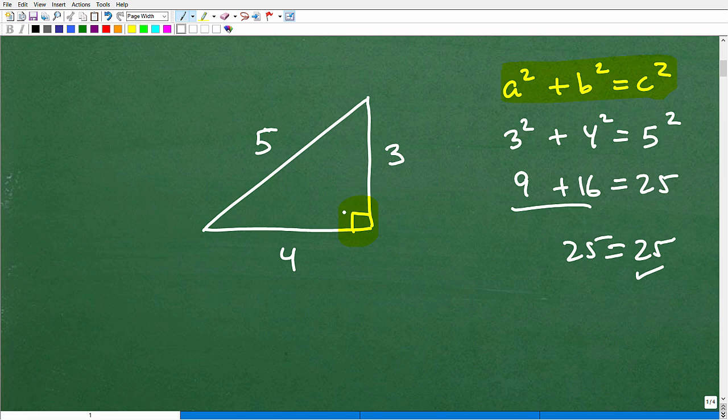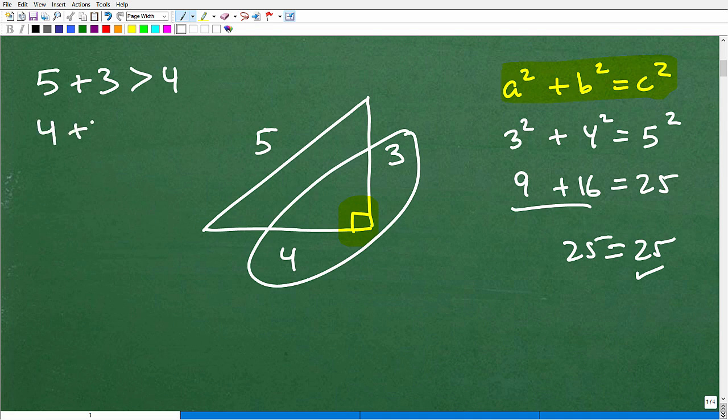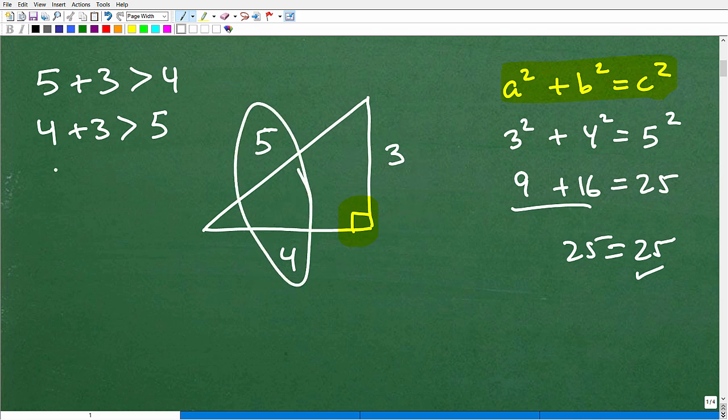It's called the triangle inequality theorem. And this is the way it works. It says any two lengths of an actual triangle, when you add them up, so let's add these guys up right here, five plus three. When you add up any two sides, it will always be greater than the remaining side. So five plus three, that's greater than four. Let's do another one. How about this one right here? Take these sides. Four plus three. Is that greater than five? Yes. So five plus three, that's eight. Eight's greater than four. Four plus three, that's greater than five. And then obviously, we have this last one right here. Five plus four, that is greater than three.